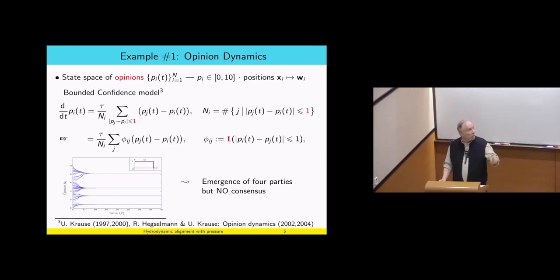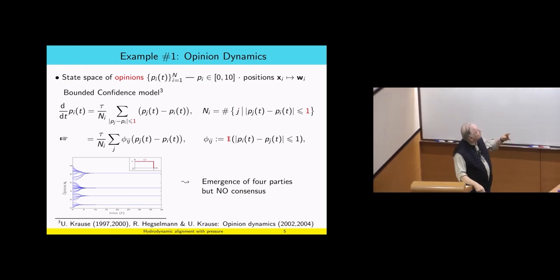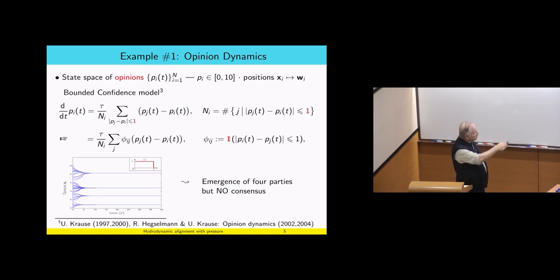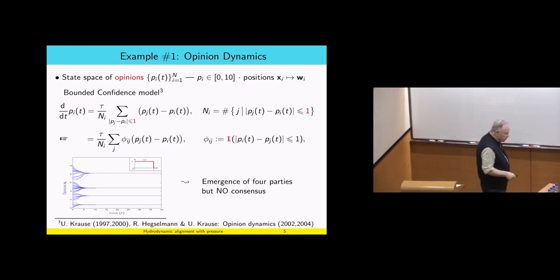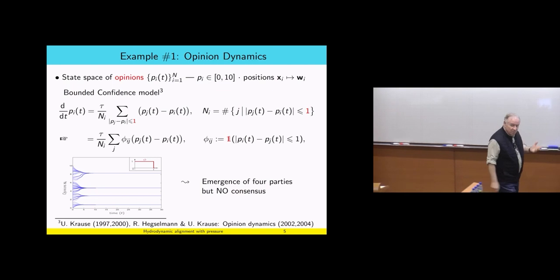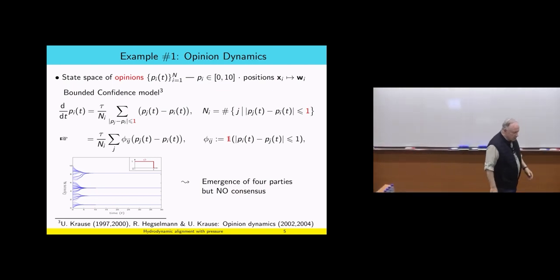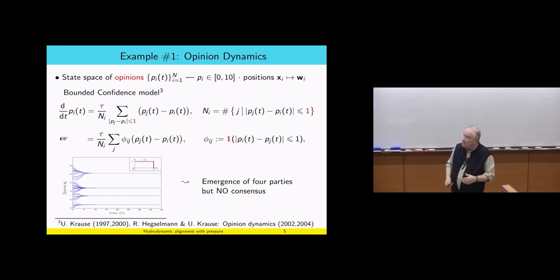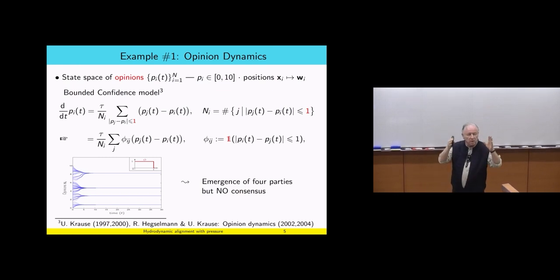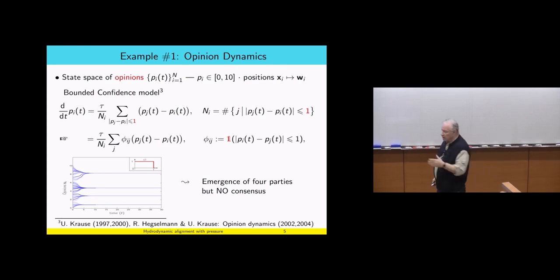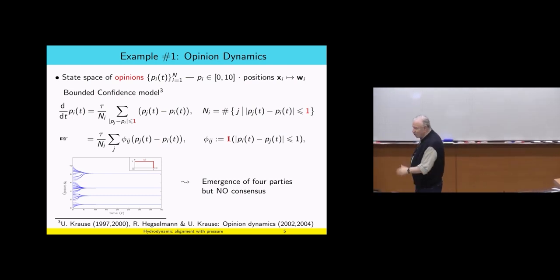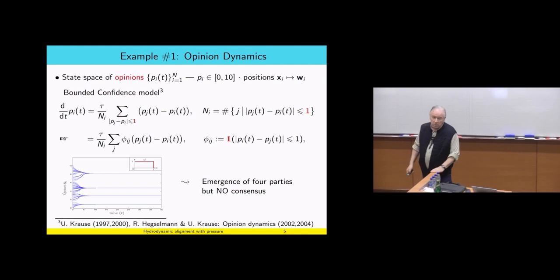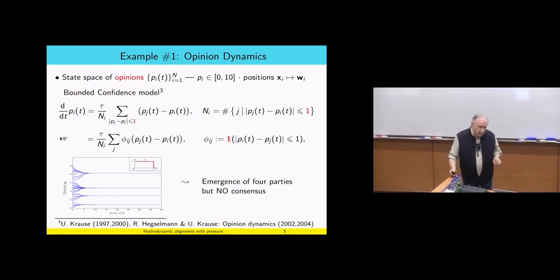Here is an example: this is time, here is the distribution of opinions from zero to ten, and you can see agents with various opinions. Each two agents whose distance does not exceed one mingle together and try to average out. As you go in time, even though opinions start with a sort of uniform distribution, they separate into four separate groups that do not communicate because the distance between them is greater than one. The general answer for emergence of these four parties — lack of consensus — is open even in this simple model. The difficulty is the communication kernel with compact support. From now on I will try to avoid models with compact support because there is no general theory.